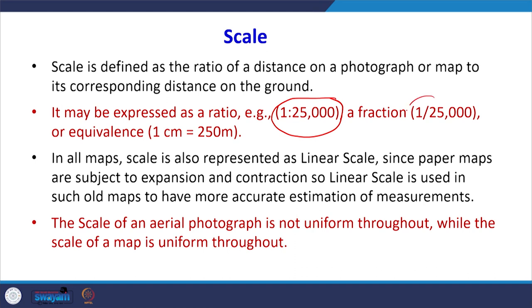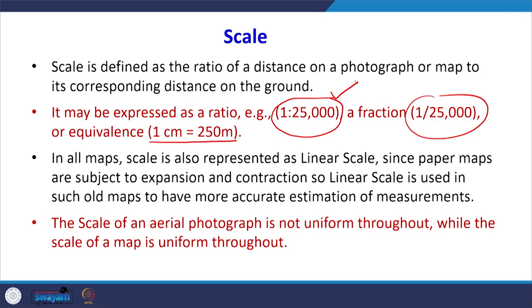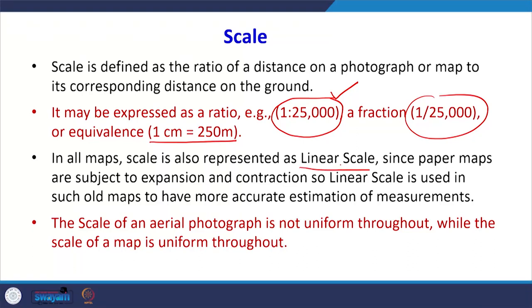The scale can be represented numerically — for example, 1/25,000 — meaning 1 unit on the aerial photograph equals 25,000 units on the ground. So 1 centimeter on the photograph equals 25,000 centimeters, or 250 meters, on the ground. A very common way of denoting the scale numerically is 1:25,000, but we can also write it as an equivalent statement like '1 cm = 250 m'.